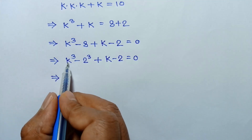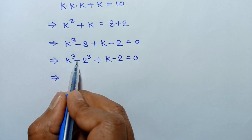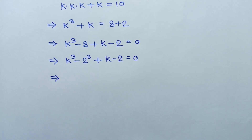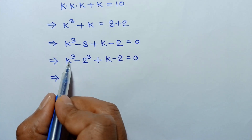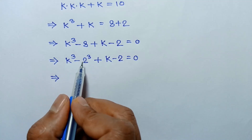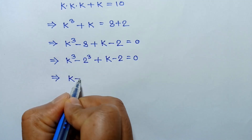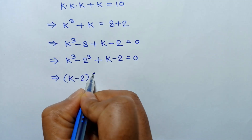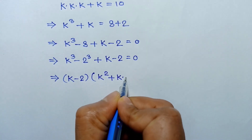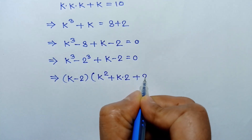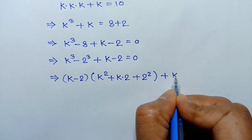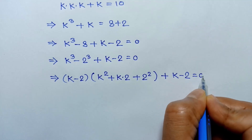This can be written using the formula: a cube minus b cube equals a minus b times a square plus ab plus b square. Applying this formula here, we can write k cube minus 2 cube as k minus 2 times k square plus k times 2 plus 2 square, and this plus k minus 2 is equal to 0.